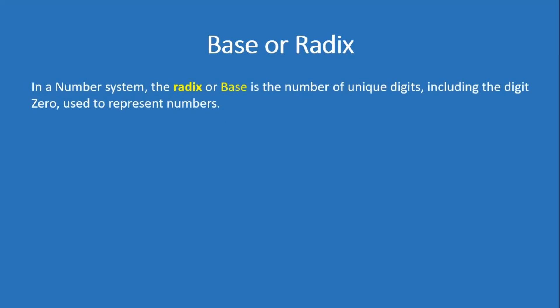In a number system, the radix or base is the number of unique digits including the digit 0 used to represent numbers. So when you are representing a number, how many unique digits you can use in a number system? That number is your radix or base.